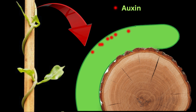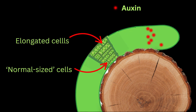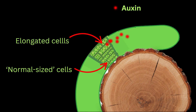Auxins accumulate on the side of the tendril opposite the side being touched. Because auxins promote cell elongation, the cells on the untouched side grow faster than those on the side in contact with the object. As a result, the tendril bends towards the object, eventually curling or wrapping around it.